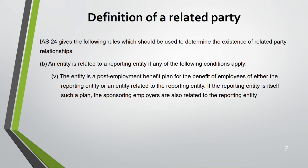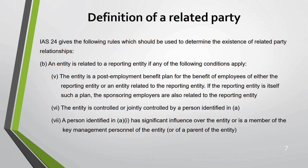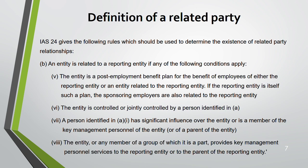The more questions you do, the better you understand these rules. Continuing Part B: an entity is related if it is controlled or jointly controlled by a person identified in Part A, or if a person has significant influence over the entity or is a member of key management of the entity or any group member that provides key management services to the reporting entity.